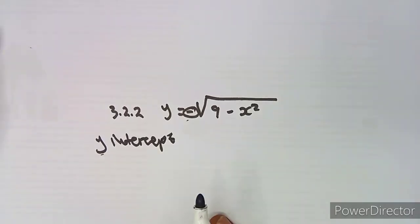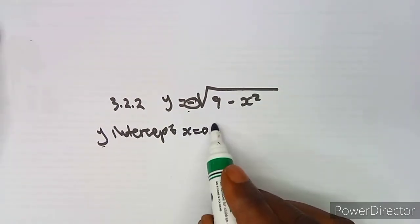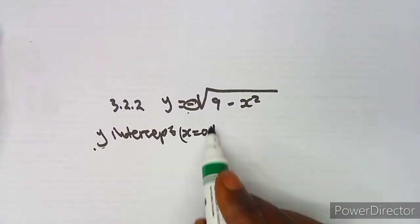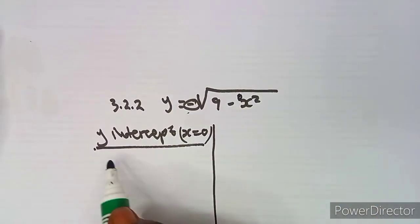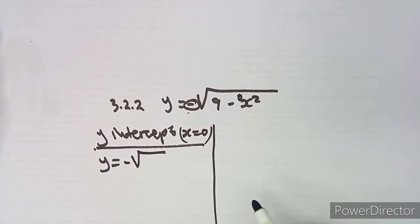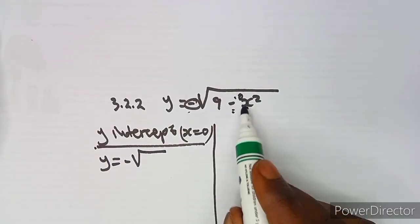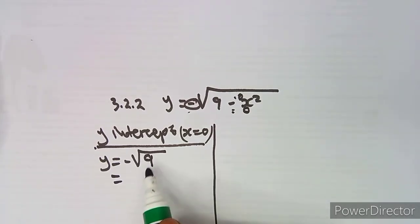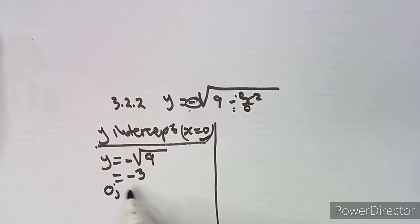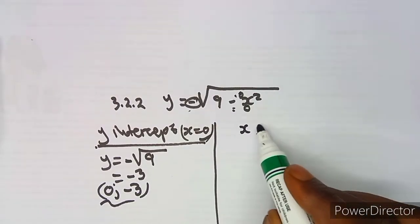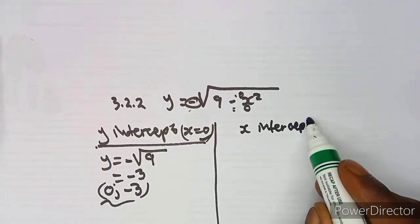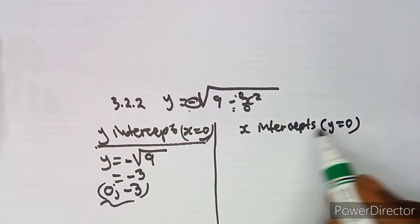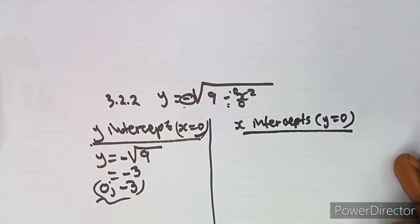For the y-intercept, x = 0. Substituting gives y = -√(9 - 0) = -√9. Since we are limited to the negative square root, y = -3 when x = 0. For the x-intercepts, the negative sign does not affect the result because zero neutralizes the negative.